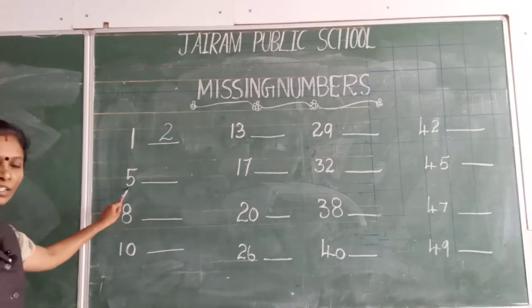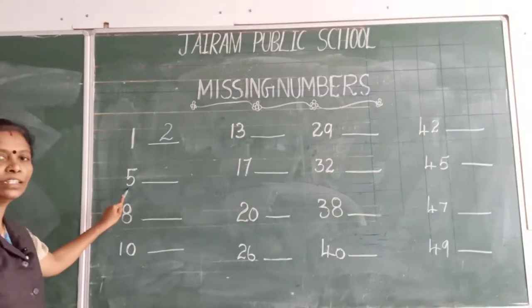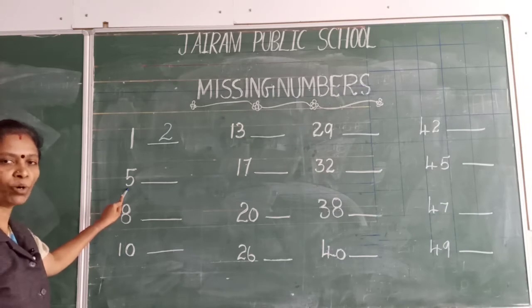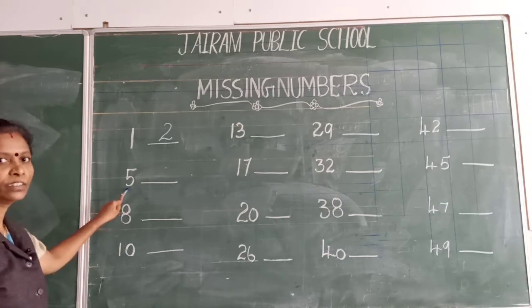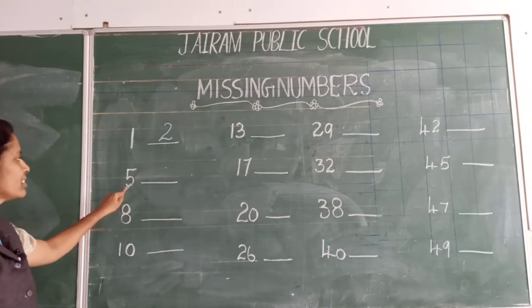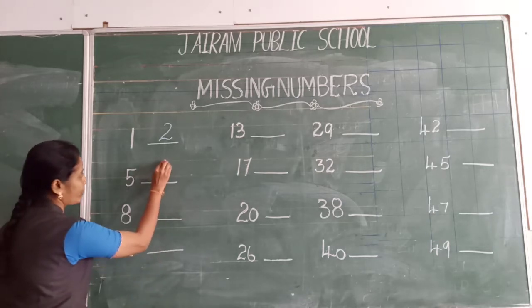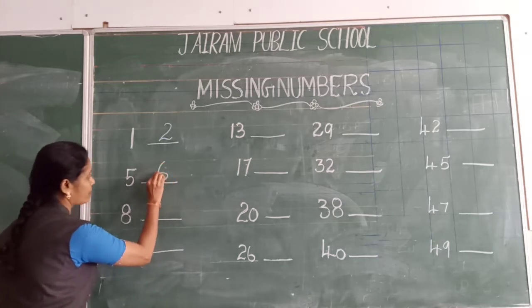What is this number? Number 5. After 5, what number is coming? Children? 6. Number 6.